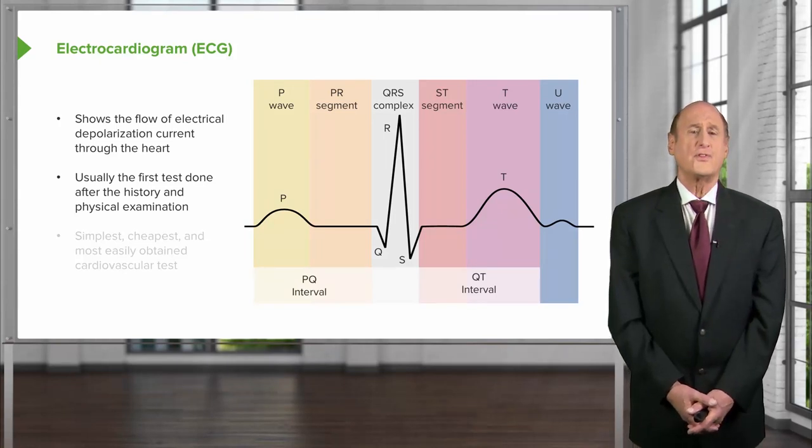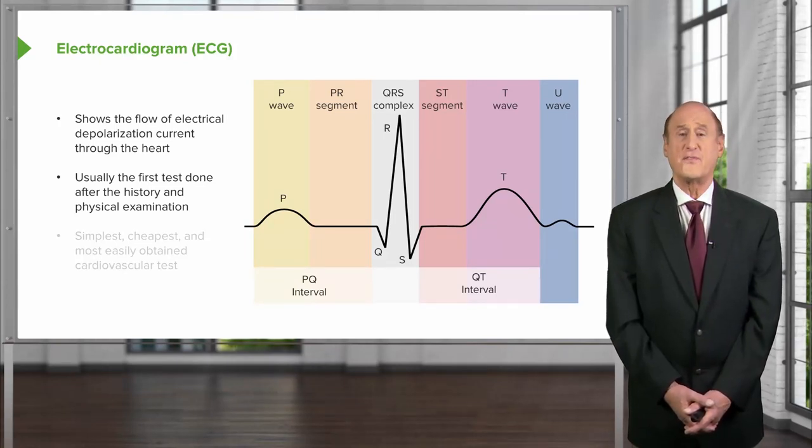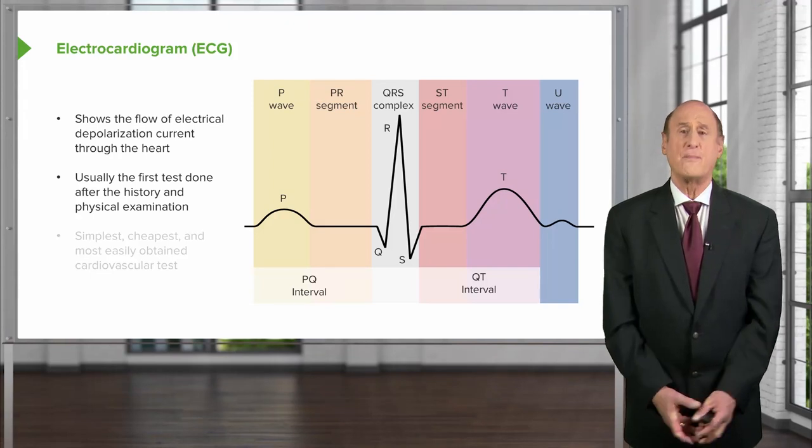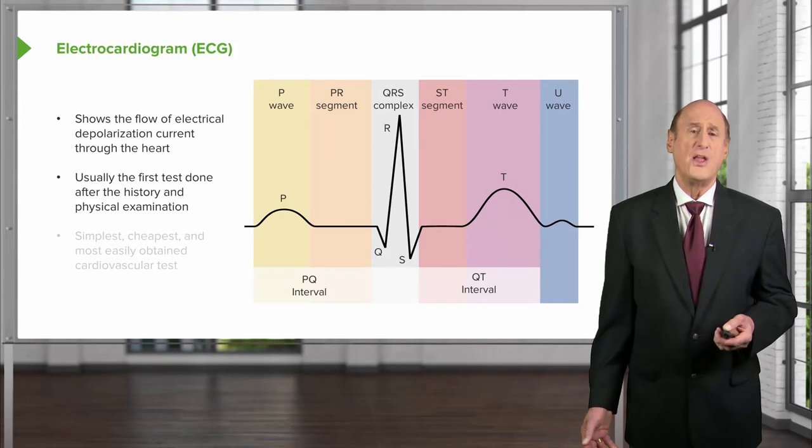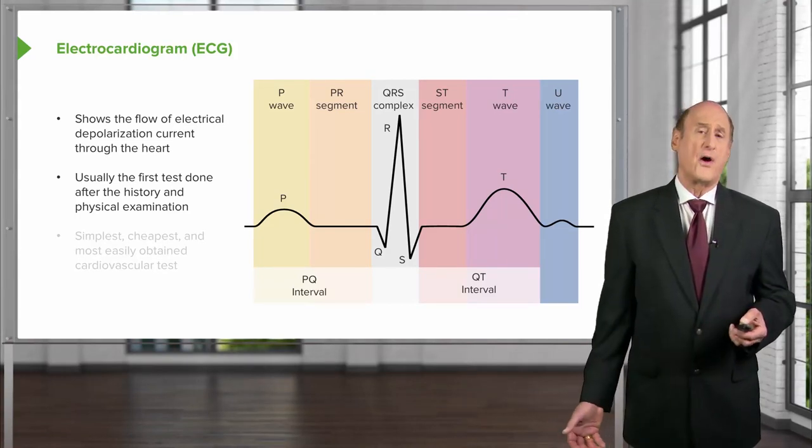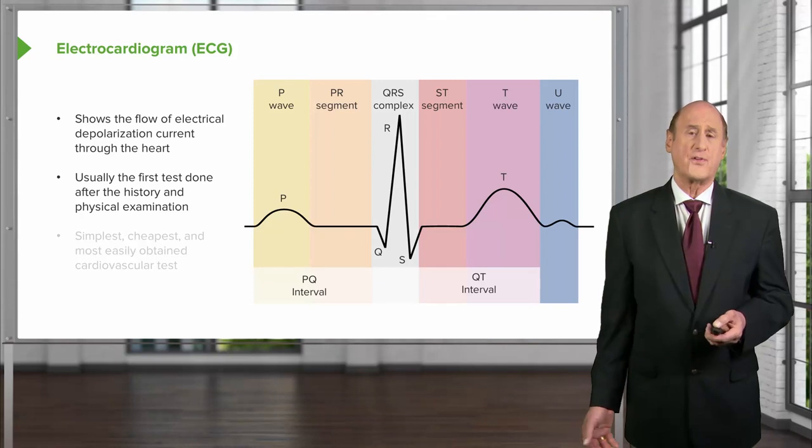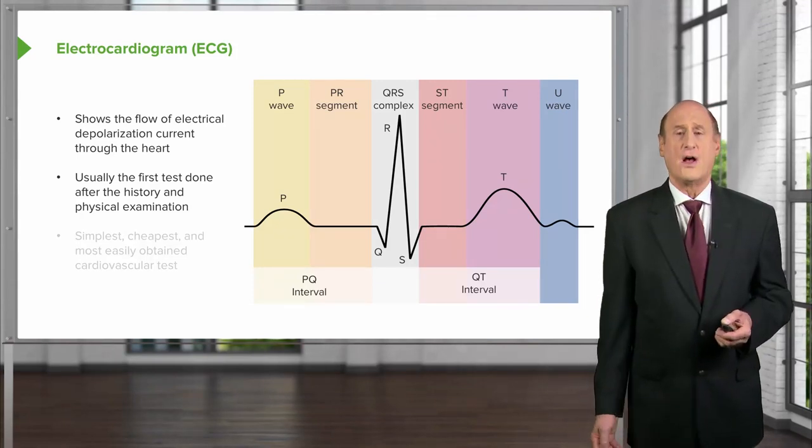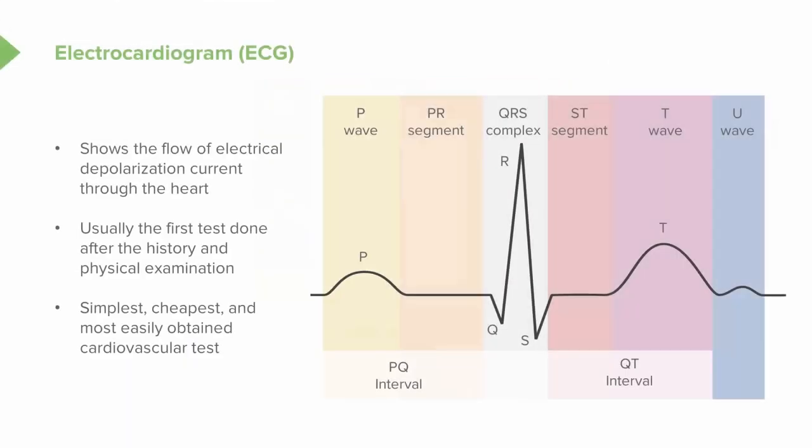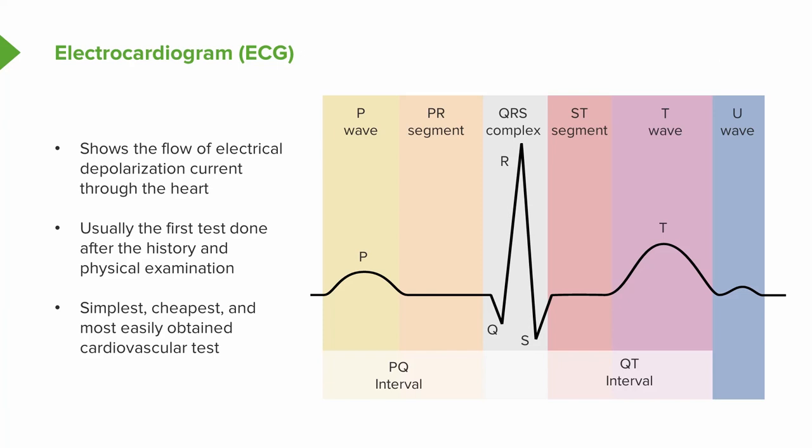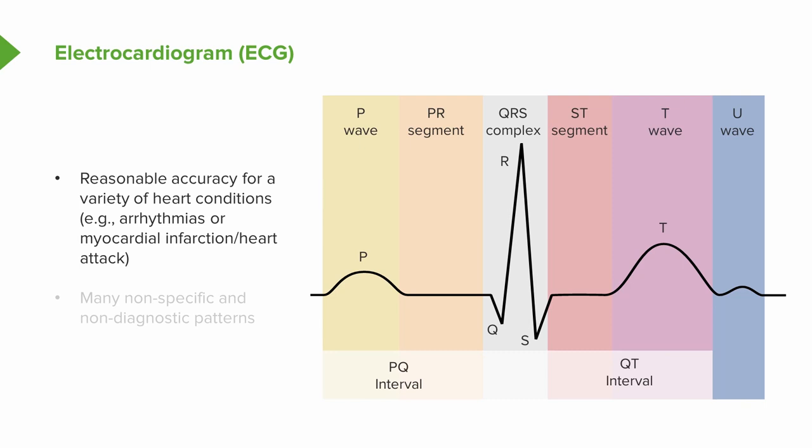The electrocardiogram is usually the first test done after the history and physical exam. It's often done in offices—it's very simple and many physicians' offices have their own system. Usually it's done by a technician in the office or by the office nurse. In the hospital there's a whole series of technicians who are on 24 hours a day to record accurate electrocardiograms. It is again the simplest, cheapest, and most easily obtained cardiovascular test. It has reasonable accuracy for a variety of heart conditions, for example arrhythmias or myocardial infarction, a heart attack.